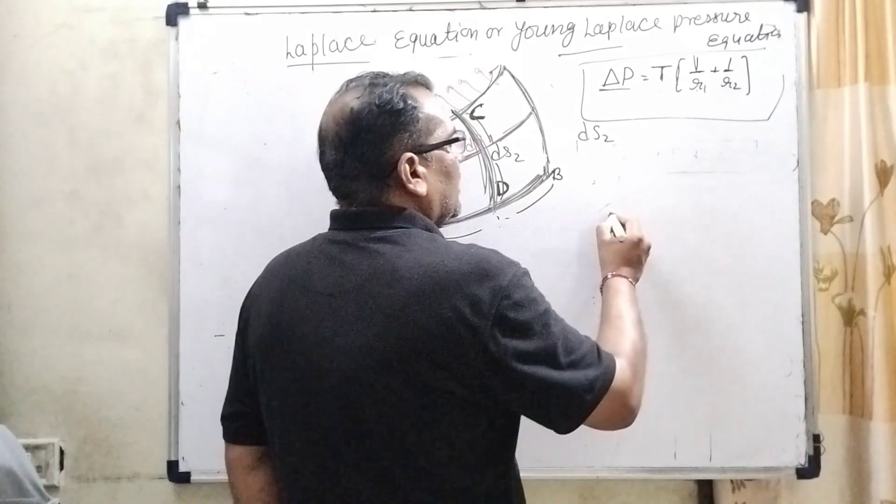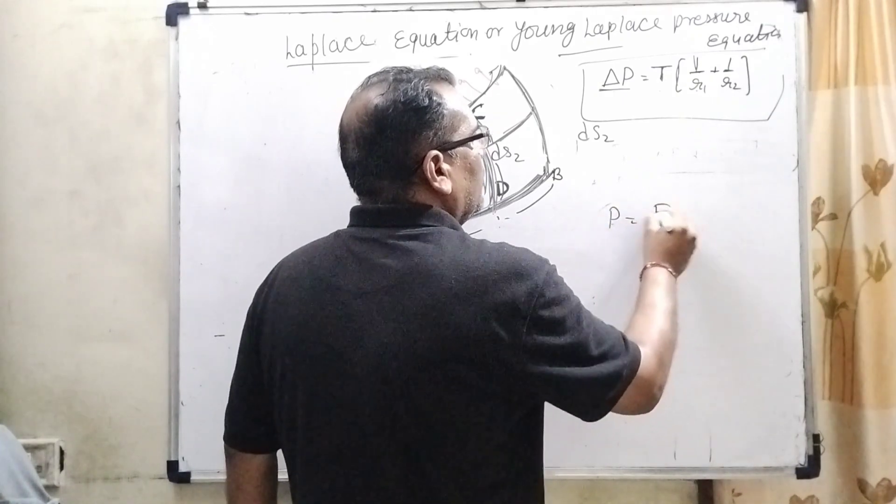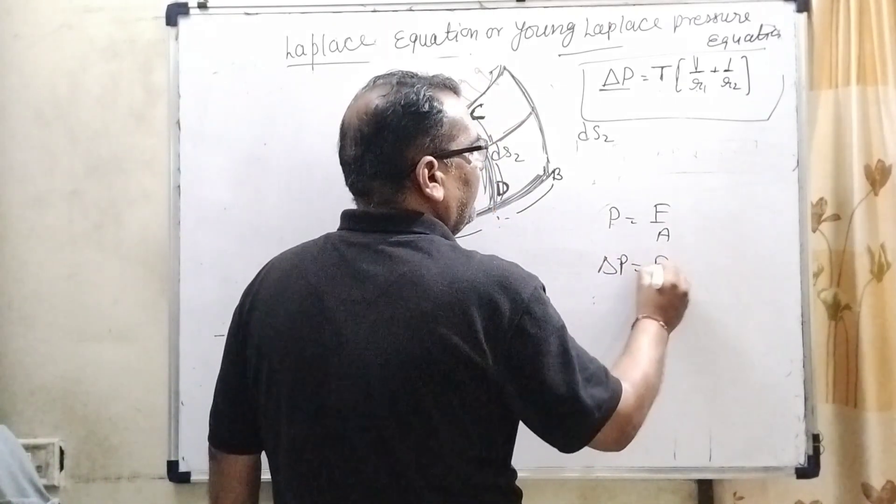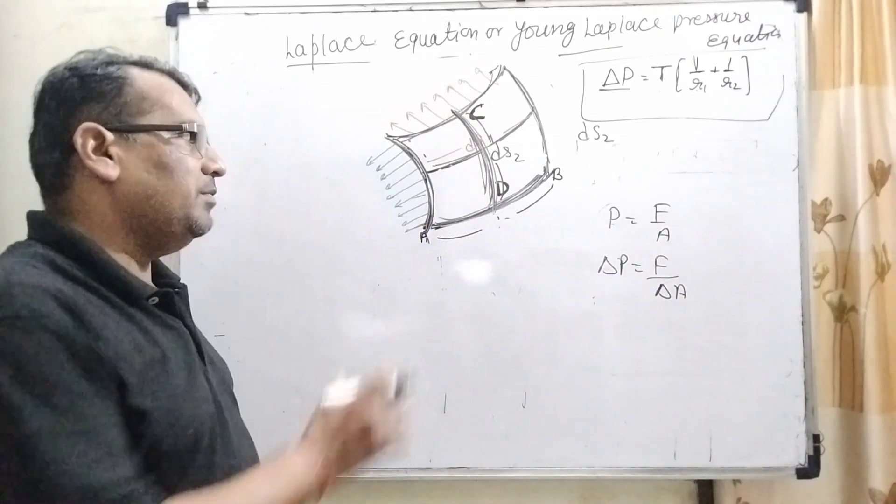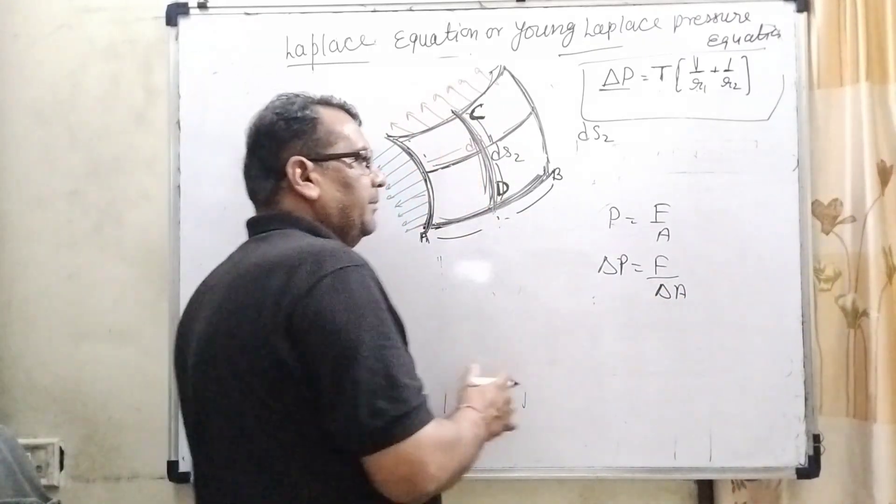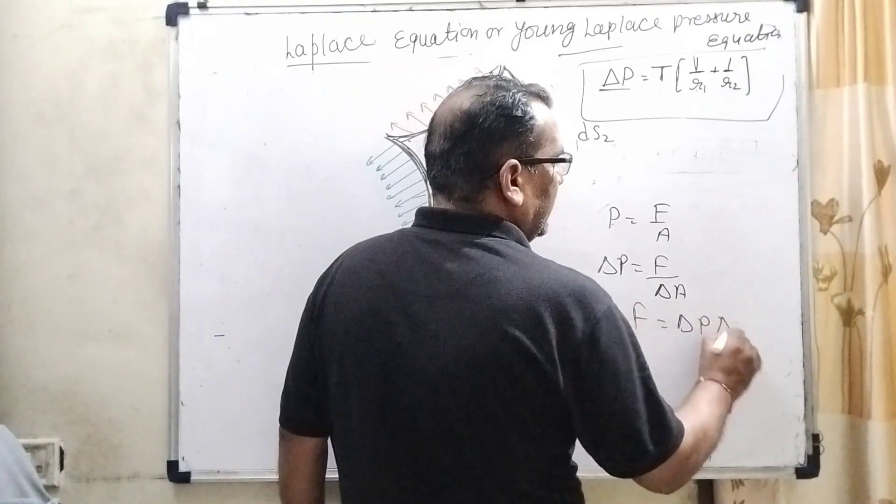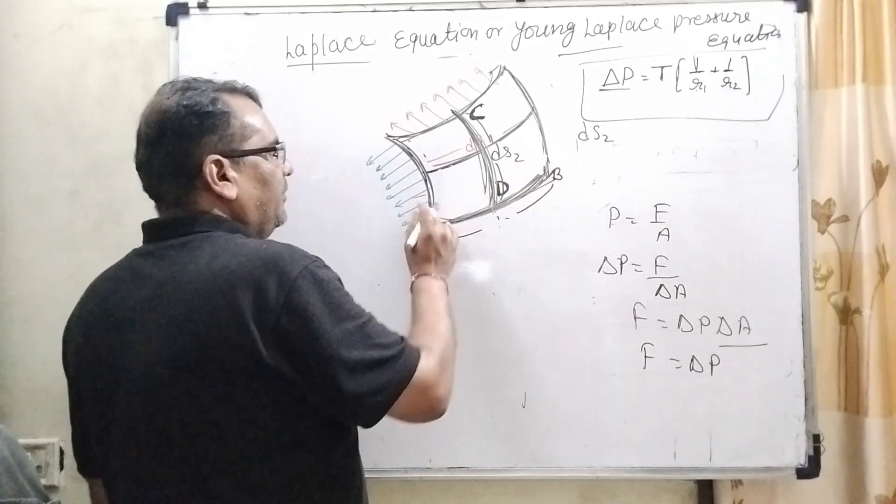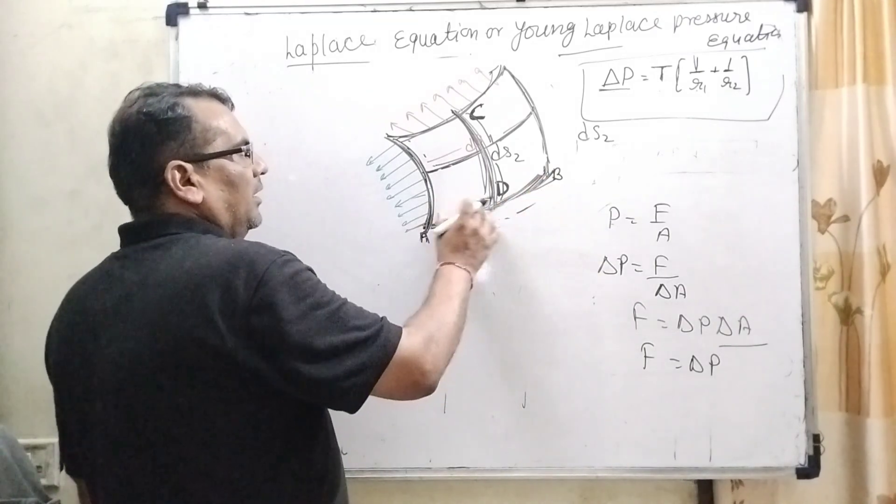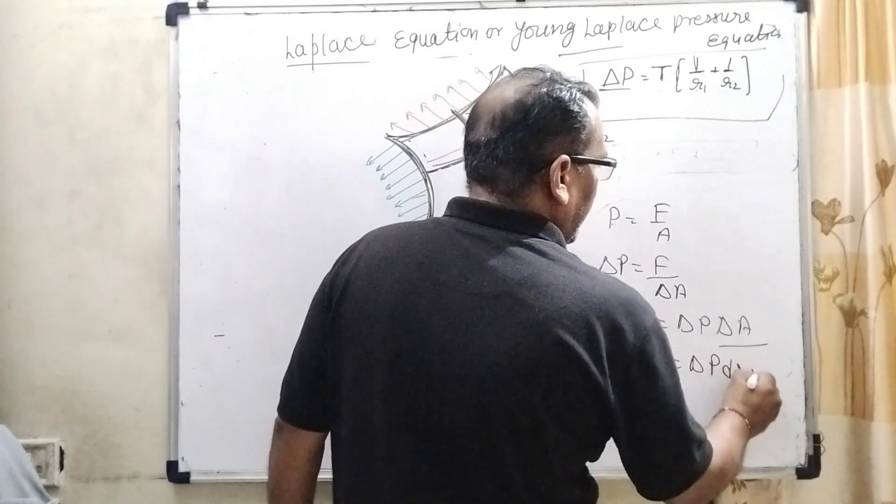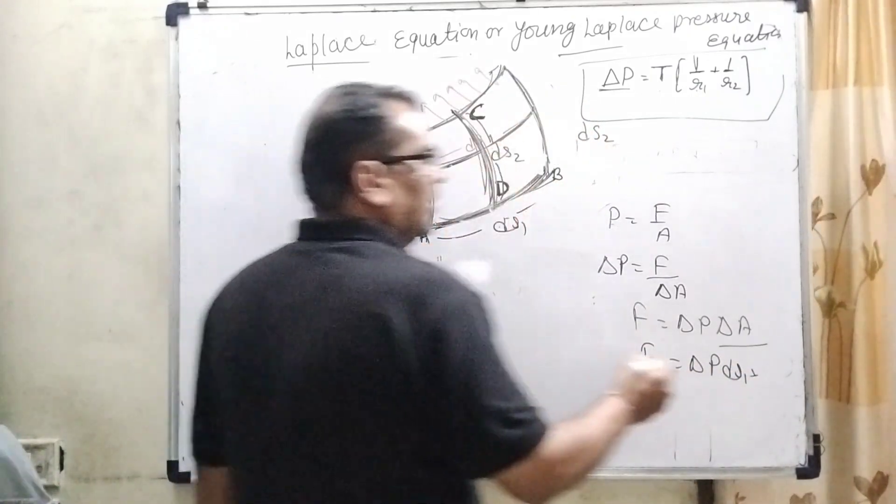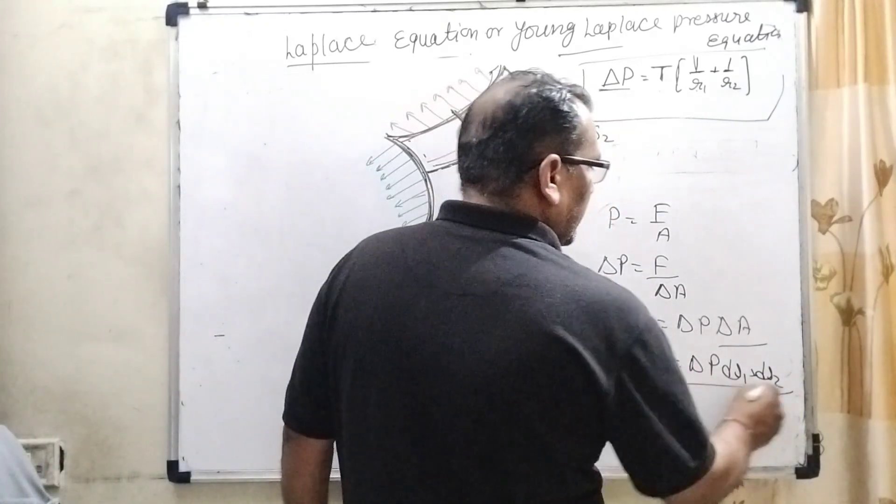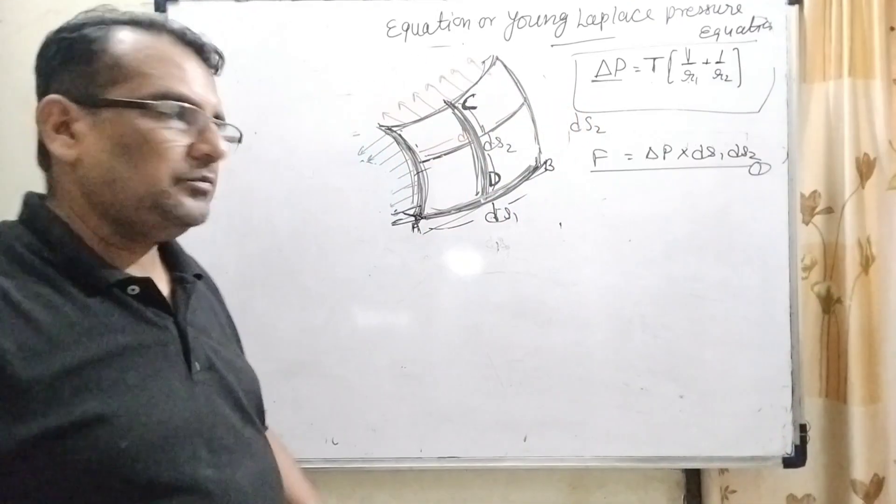Here, we know that very well, pressure equal to force upon area. But here we have to take a small part. So therefore, delta P equal to F upon delta A. Here we have to take delta as a small part of this liquid body. Force equal to delta P into delta A. Here, delta A is along AB, which is DS1, and along CD, the curvature is DS2. So length into width means DS1, DS2. This is the first equation we have considered.